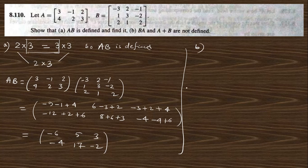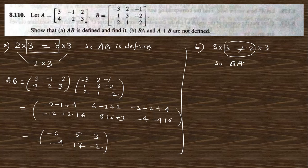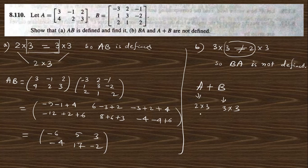For question B, BA is not defined. The order of B is 3×3 while the order of A is 2×3. Since the number of columns of B does not equal the number of rows of A, BA is not defined. Similarly, A+B is also not defined because for addition or subtraction the dimensions of both matrices must be the same, but here A is 2×3 and B is 3×3, so A+B is also not defined.